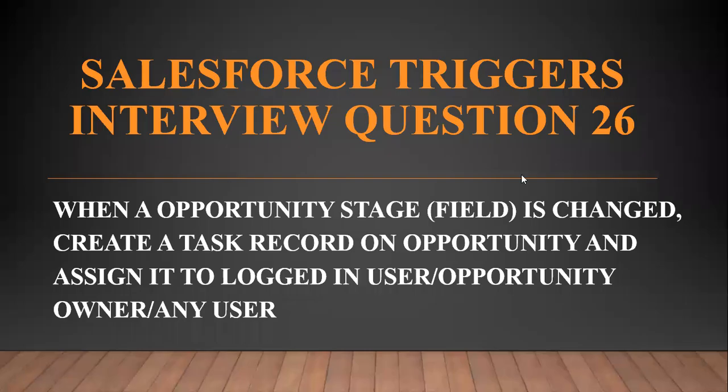Hi all, welcome to the Salesforce Ultimate Guide channel. In this video we are going to continue with our trigger scenario 26, question 26: when an opportunity stage is changed, create a task record on the opportunity and assign it to the logged-in user, opportunity owner, or any user.